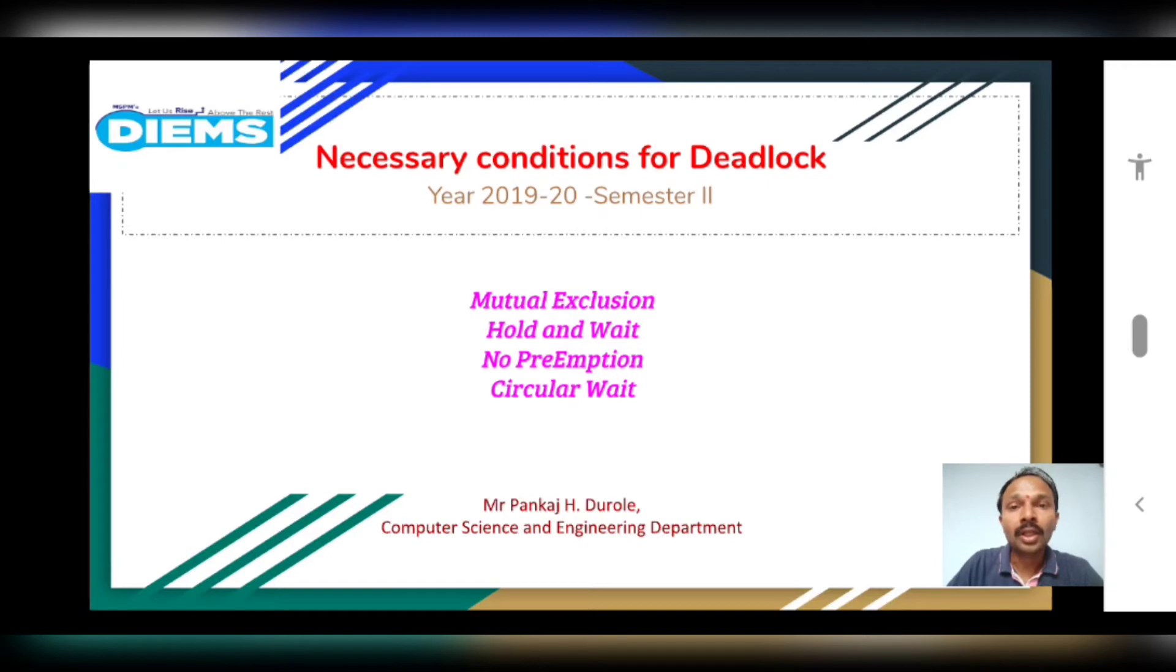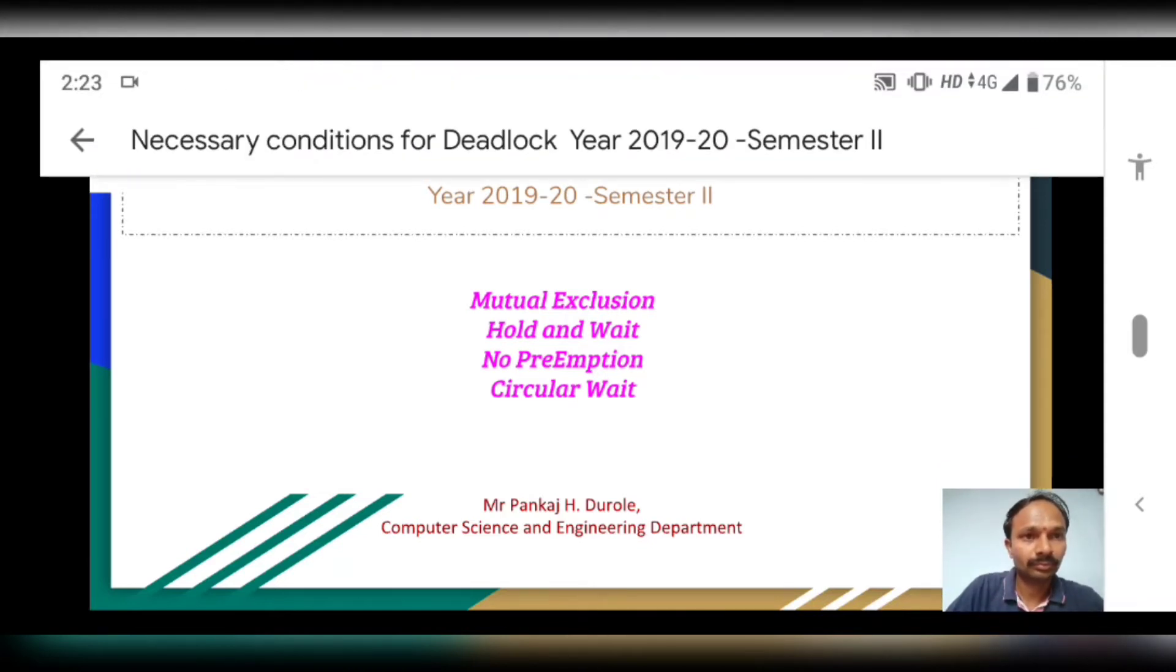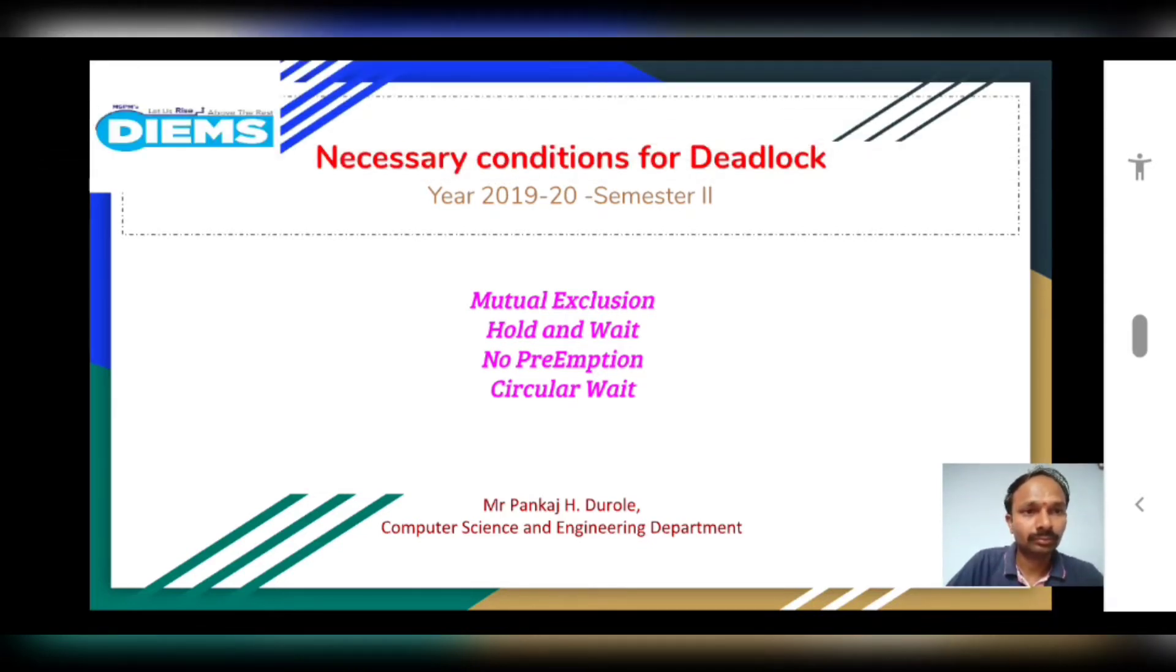They are mutual exclusion, hold and wait, no preemption, and circular wait. So let us see them one by one.